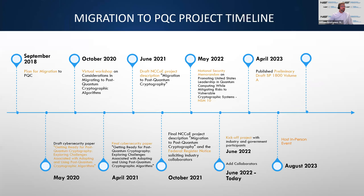Here's the timeline: we started in September 2018 thinking about this and had a workshop during COVID drafting a description of what we wanted to do. We recognize that here at the center we could make an impact on a huge challenge. Any crypto migration — think about going from SHA-1 to SHA-2 or SHA-3 — and if you've looked for how others have done it, you may discover that SHA-1 is still out there. This migration, which should be the biggest ever undertaken besides actually implementing PKI in the last 25 years, is huge.